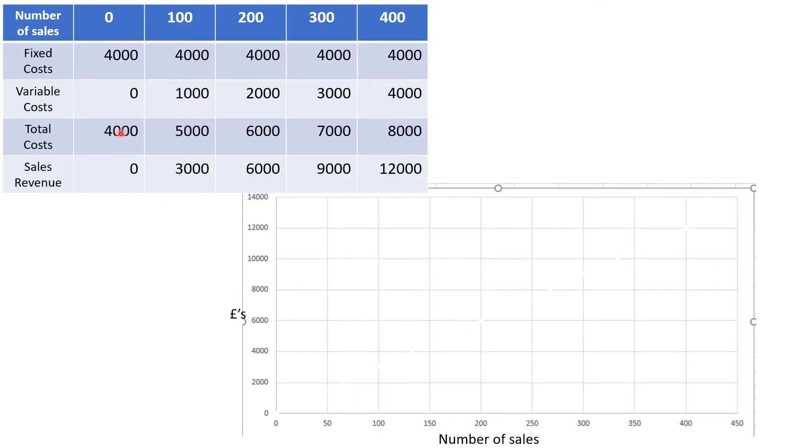So the first line that we are going to put on is our fixed cost line. If we go down to zero for the number of sales and then we go up to £4,000, you can see at zero it will be £4,000. At 100 it will be £4,000. So the fixed cost line will always be horizontal.